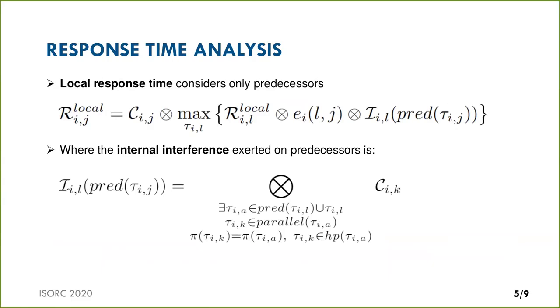To compute the response time of a given subtask, we proceed in several steps. First, we compute the local response time considering only the effect of predecessor subtasks. Recursively, we update the response time of successor subtasks by the maximum response time over predecessors and by the internal interference exerted by parallel predecessor subtasks on each other. This interference equals the convolution of execution time distributions C_ik of parallel predecessor subtasks.